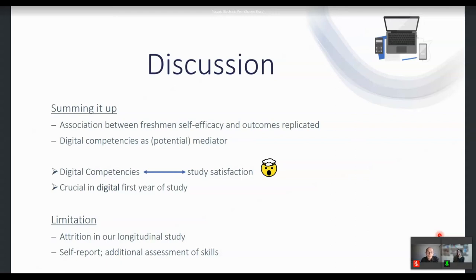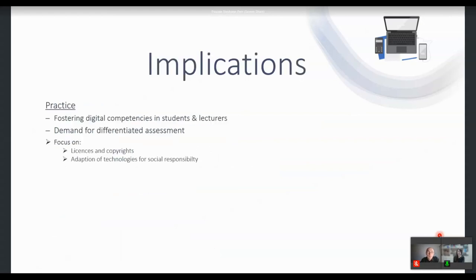Our study has some limitations. For example, our longitudinal study has to deal with attrition — not every student who participated at the first point of measurement still participated at the third. This might have led to some bias. Nonetheless, we observed a large number of students across different fields of study. We also only used self-report; what we would like to do in the future is to have other forms of assessment, for example knowledge tests.